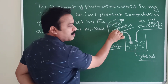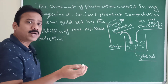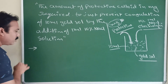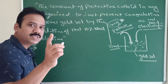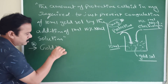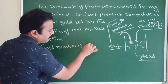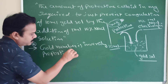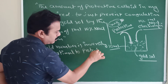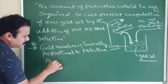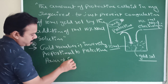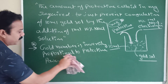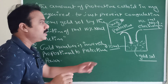If the gold number is lower, the protective power is higher. Gold number is inversely proportional to the protective power of the protective colloid. Simply: lower gold number means greater protective power.